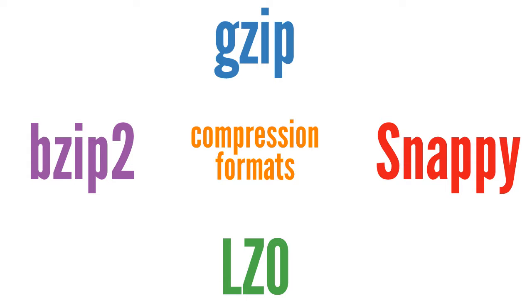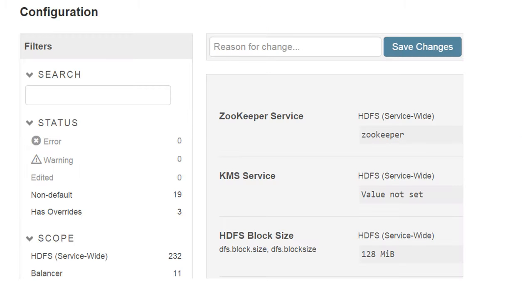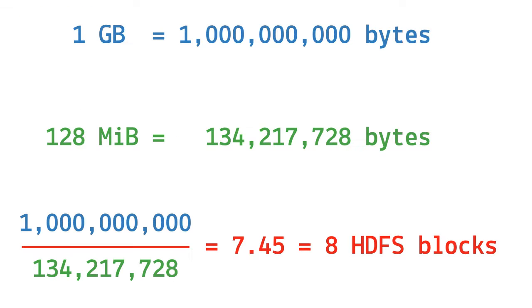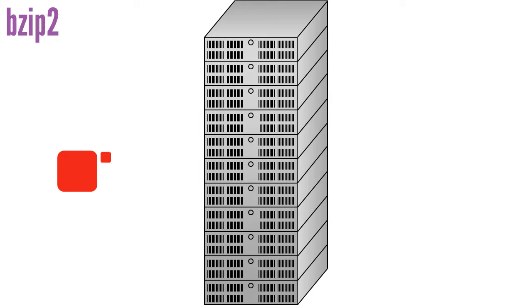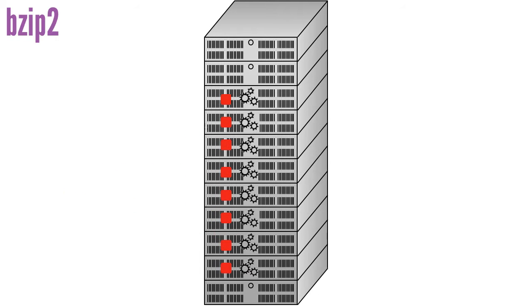Let's take a look at the advantage of a splittable format. For example, say your Hadoop cluster's HDFS block size is 128 megabytes, and say you ingest a BZIP2 file whose compressed size is 1 gigabyte. If we divide the number of bytes in 1 gigabyte by the number of bytes in 128 megabytes, you can see that the file will be stored in HDFS as 8 blocks. HDFS automatically splits the BZIP2 file into 8 blocks and stores them on different Hadoop data nodes. A BZIP2 file contains a synchronization marker between blocks, which enables a MapReduce job to run 8 map tasks in parallel, one for each of the 8 blocks.